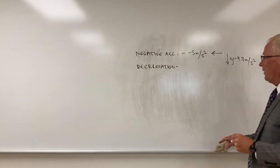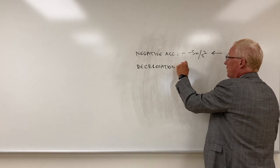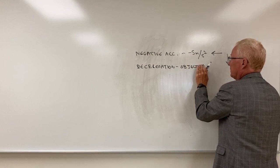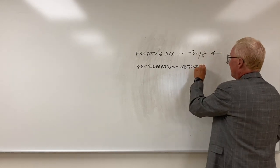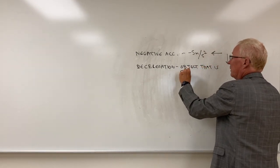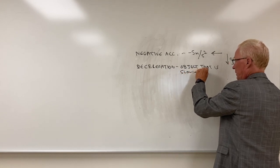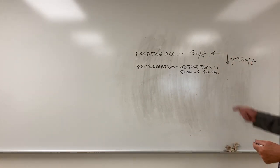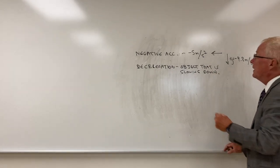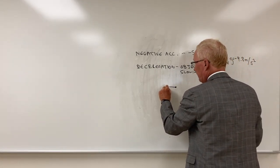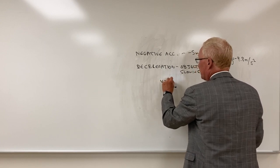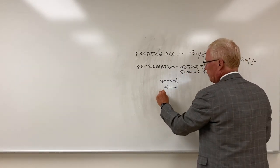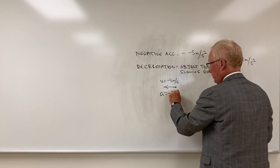Deceleration, on the other hand, is an object that is slowing down. So as an example of negative acceleration, say we have an object going to the left with a velocity of minus 5 meters per second, and the acceleration is minus 2 meters per second squared.